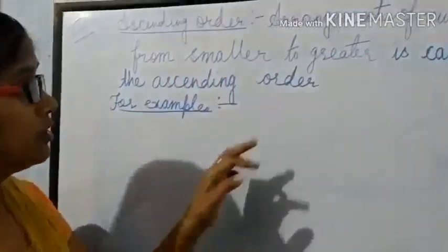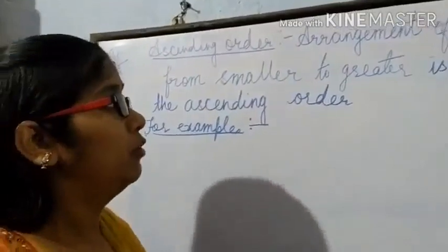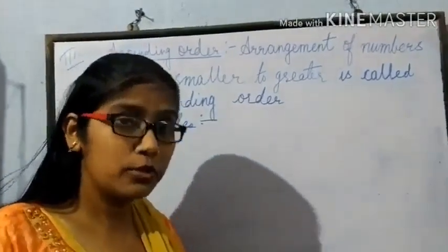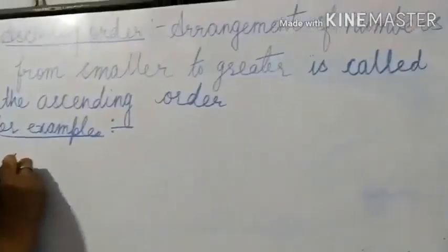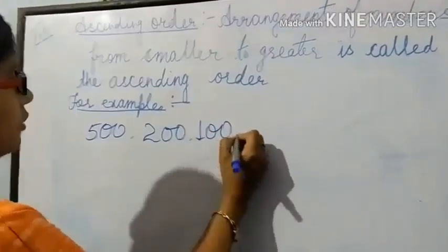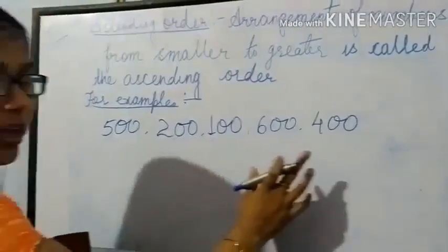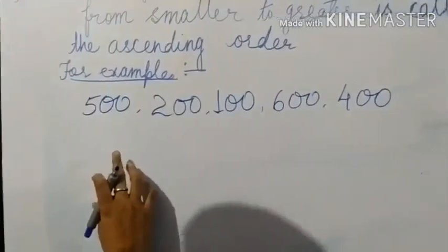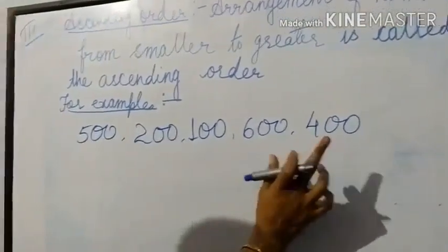Question number three: ascending order. Arrangement of numbers from smaller to greater is called ascending order. For example, suppose I have taken 500, 200, 100, 600, and 400. When we have to arrange these in ascending order, all of these are three-digit numbers.